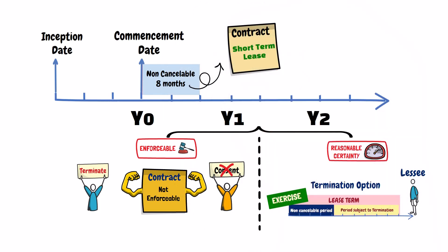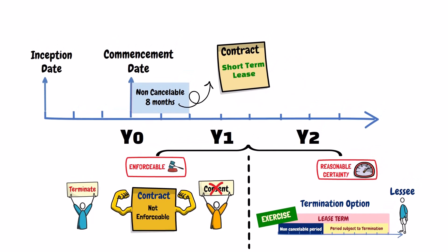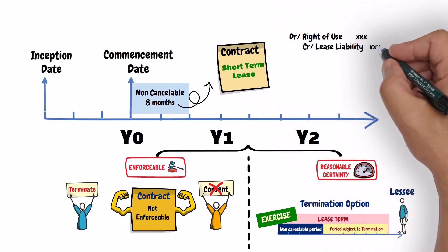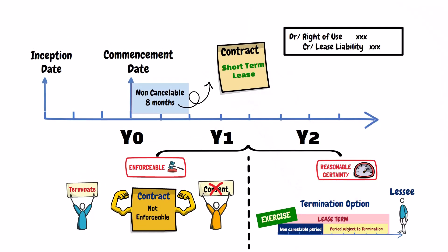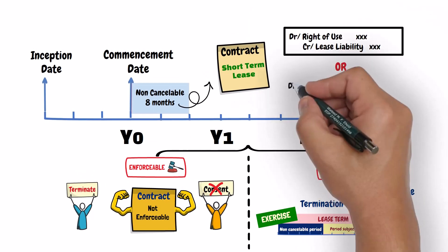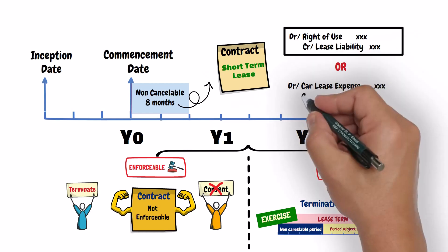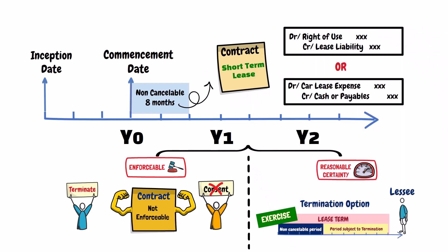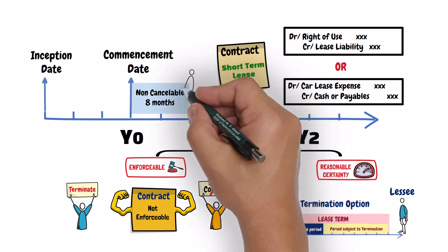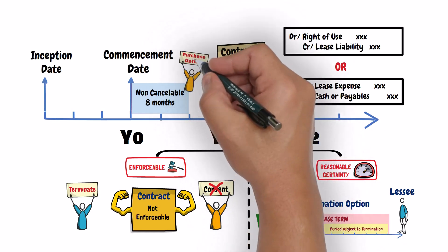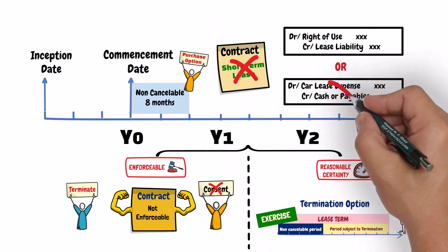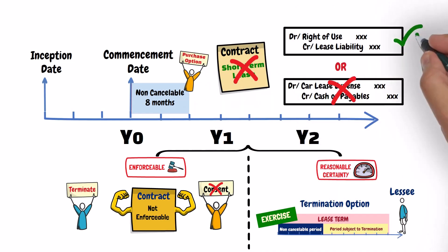The lessee has the option to either recognize a right-of-use asset and a lease liability at the commencement date, or to recognize the lease payment directly to the profit and loss account. Note that if the lease agreement includes an option for the lessee to purchase the car by the end of the lease term, then the lease is not a short-term lease, and therefore should be accounted for by recognizing a right-of-use asset and a lease liability.